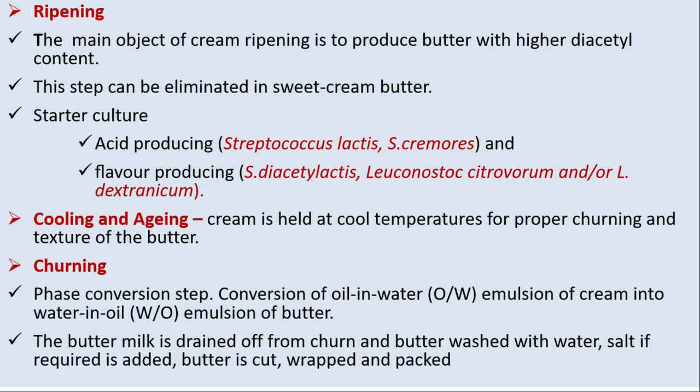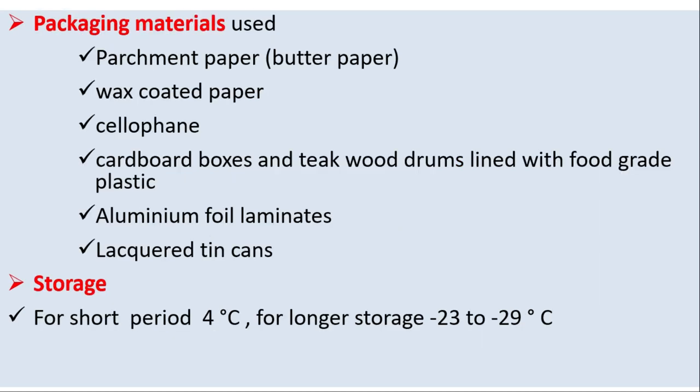Cooling and aging: cream is held at cold temperatures for proper churning and texture of the butter. Churning: this is the conversion step — conversion of the oil-in-water emulsion of cream into a water-in-oil emulsion of butter. The buttermilk is drained off from the churn and butter is washed with water; salt if required is added, then butter is cut, wrapped, and packed. Packaging materials include parchment paper (also known as butter paper), wax-coated paper, cellophane, cardboard boxes, teakwood drums lined with food-grade plastic, aluminum foil laminates, and liquid tin cans. Storage: 4°C for short periods; −23°C to −29°C for longer storage.